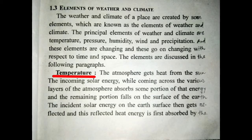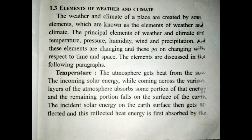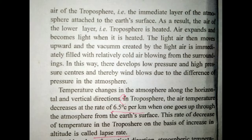The first element is temperature. The atmosphere gets heat from the sun. The incoming solar energy, while passing across the various layers of the atmosphere, is partially absorbed by those layers, and the remaining portion falls on the surface of the earth. The solar energy incident on the earth's surface then gets reflected, and this reflected heat energy is first absorbed by the air of the troposphere.